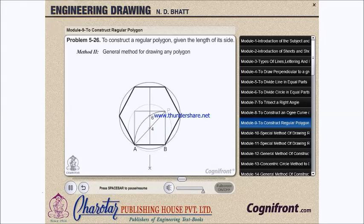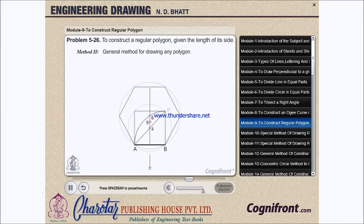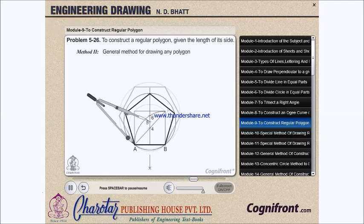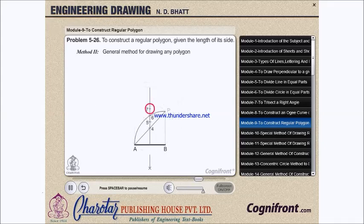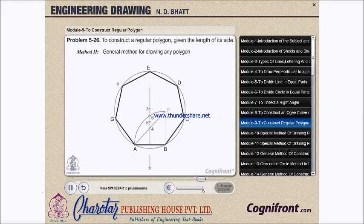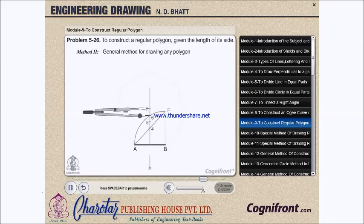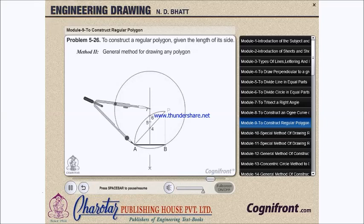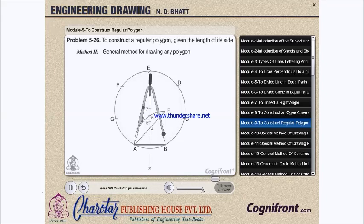A regular hexagon of side equal to AB can be inscribed in the circle drawn with center 6 and radius A6. The midpoint 5 of the line 4-6 is the center of the circle of radius A5 in which a regular pentagon of side equal to AB can be inscribed. To locate center 7 for the regular heptagon of side AB, step off a division 6-7 equal to the division 5-6. With center 7 and radius equal to A7, draw a circle. Starting from B, cut it into 7 equal divisions with radius equal to AB.